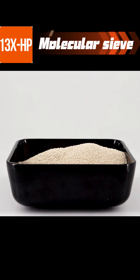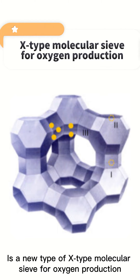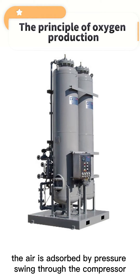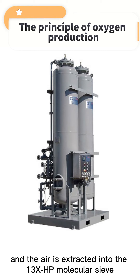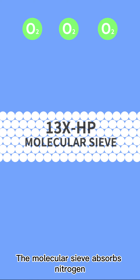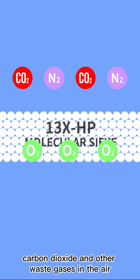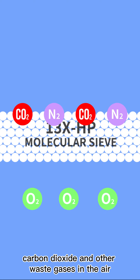13X-HP molecular sieve is a new type of oxide molecular sieve for oxygen production. The principle of oxygen production is: the air is absorbed by pressure swings through the compressor, and the air is extracted into the 13X-HP molecular sieve. The molecular sieve absorbs nitrogen, carbon dioxide, and other waste gases in the air.